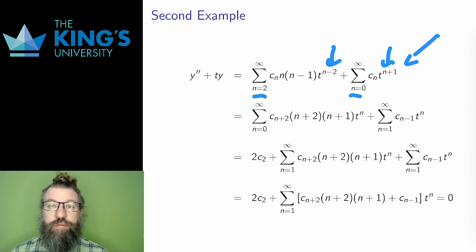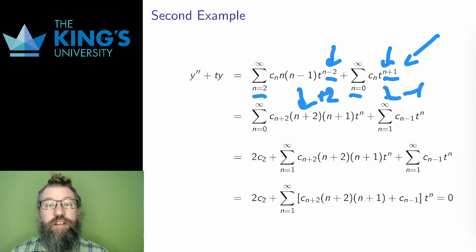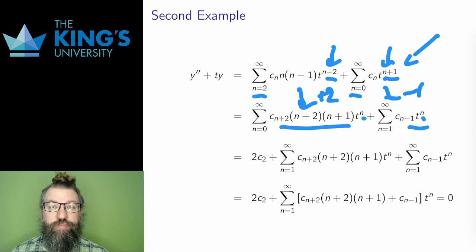In general, I'll try to match the powers of T first. Here I can do this by shifting both series, shifting the first series up by 2 and the second down by 1. That adjusts the power of T to be T to the N for both series. Then, after matching the powers of T, I'll work on matching the starting index. This is the right order of adjustments. If you match the starting index first, then working on matching the power of T might mess it up. So I need to match the starting index, but I can't shift anymore since that would mess up the powers of T. So instead, I pull out terms.